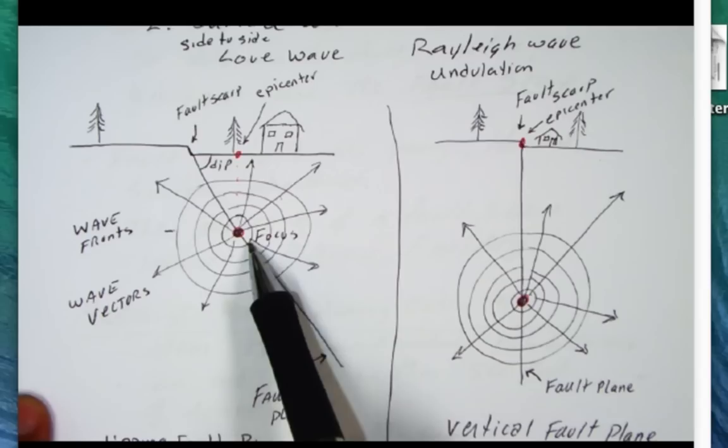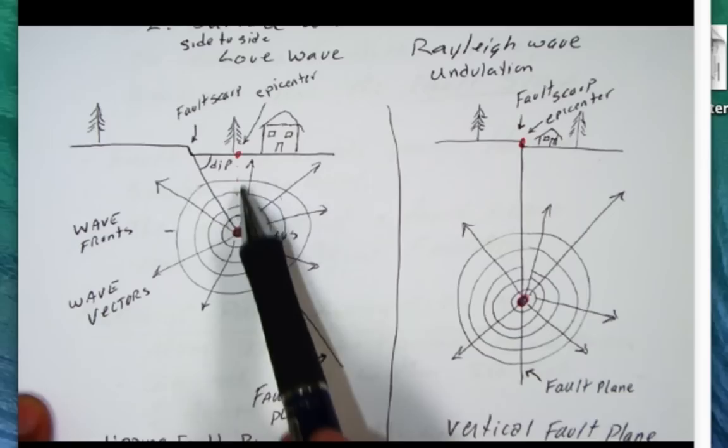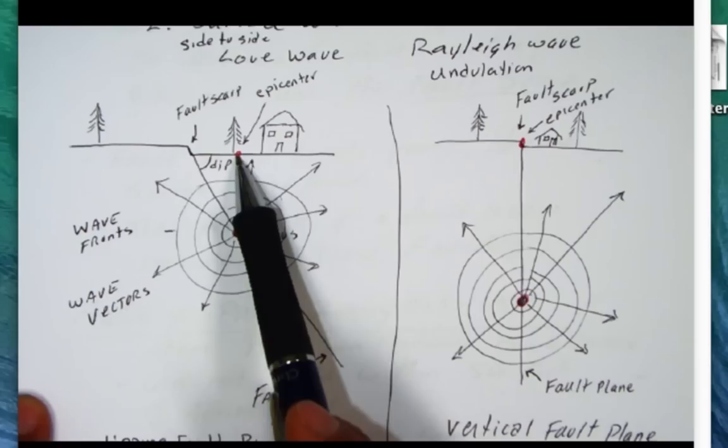The surface break that the fault plane makes with the surface is called a fault scarp. The focus of an earthquake is where rupture occurs. The focus will always occur at depth.